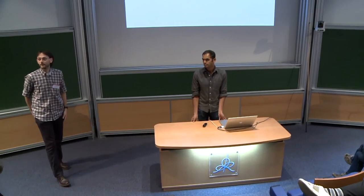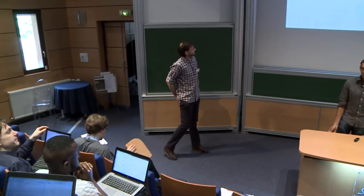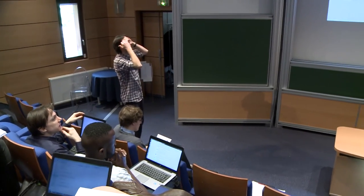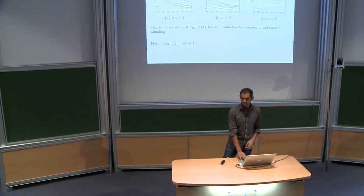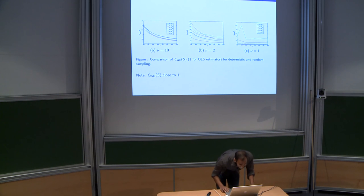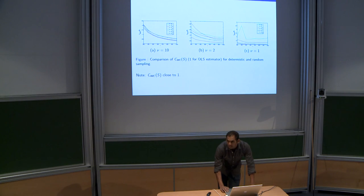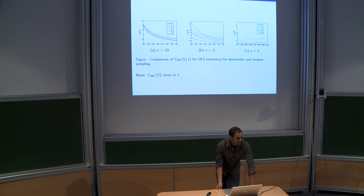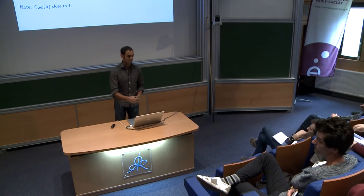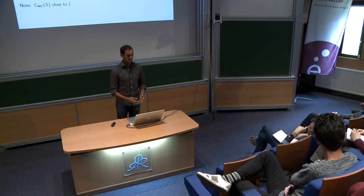During the Q&A, a question was raised about leverage score sampling simulation results. The pink curve (SHAD-R) is a fast version that computes leverage scores approximately. It does worse than if you knew the leverage scores exactly, but the fast version does better than the exactly-computed green curve. The approximate computation may introduce a kind of regularization that actually helps performance.